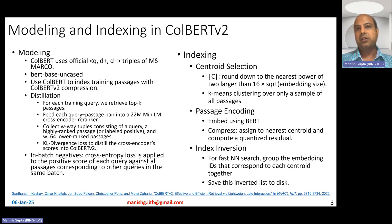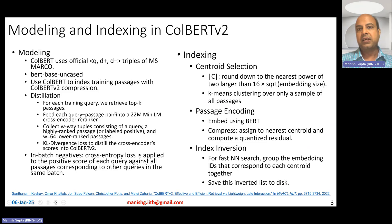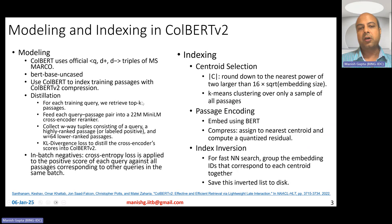For every training query, you retrieve top-K passages from the ColBERT training passage index and feed each query-passage pair into a 22-million parameter MiniLM cross-encoder re-ranker. Re-ranking is based on the query, the positive document, and 64 negative documents randomly sampled from the top 500 passages returned by the ColBERT index.